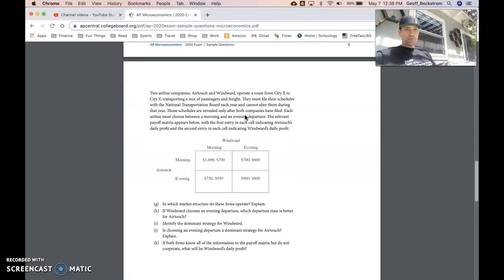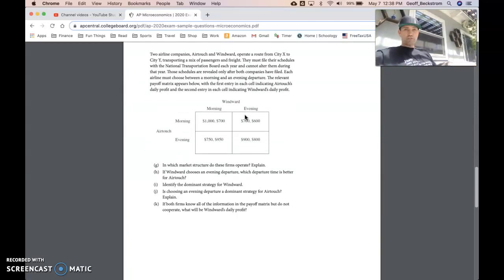All right, on to the second part of question one. The second part of question one is a payoff matrix question. I love when I see these on the AP test because they're so easy. The first thing I always do is redraw the payoff matrix or write on it if it's a paper test. I erased a little bit of it here. So you can see I've redrawn the payoff matrix like so with Air Touch over here and Windward at the top, and I've marked on it a little bit already.